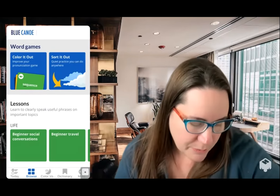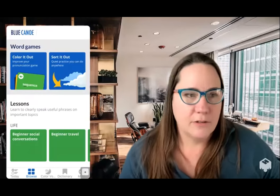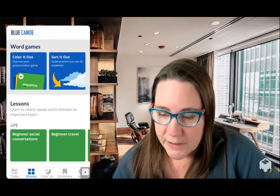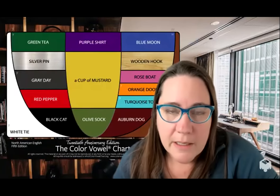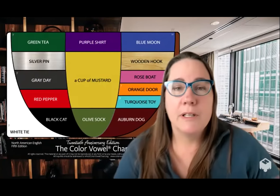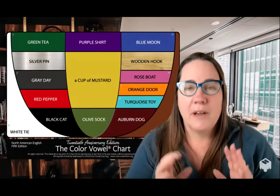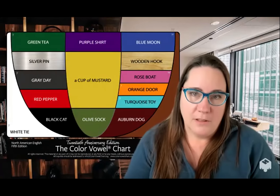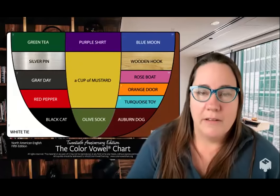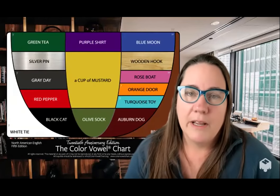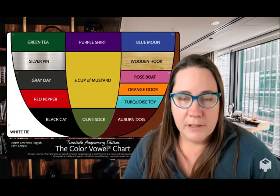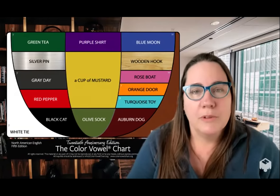Blue Canoe is an app that was born out of the last 22 years of my life's work with the Color Vowel Chart. The chart itself is something I created back in 1999. It's a way to approach spoken English and to bridge it over to written English — a touchstone for organizing words by the way that they sound. We've never really had a way to do that before without resorting to phonetic symbols or some other approach.